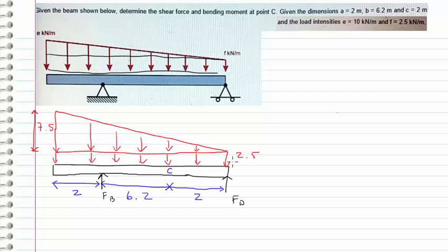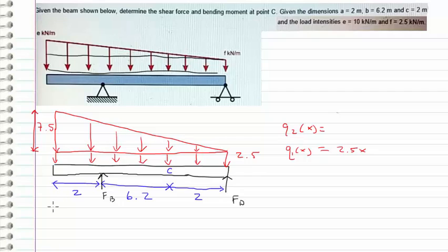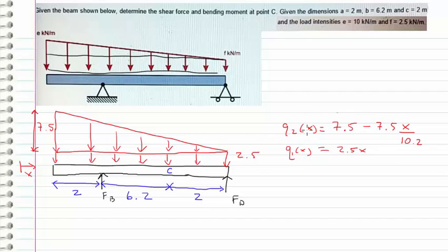Now we need to find an equation for our distributed load. The rectangle is easy — that's just 2.5 times x, because this is kilonewtons per meter, it's a rate. So there's 2.5 kilonewtons at a single point but it's distributed, so we have to take the area to find the total force. Our rectangle is 2.5x. The top triangle is a little trickier. We know at the far left side we have 7.5, and we're going to set our x going in this direction. So at the end it's 0, and we start with 7.5 and subtract 7.5x divided by the length of the beam, so that whenever x equals the beam length we get 7.5 minus 7.5 equals 0, as expected.